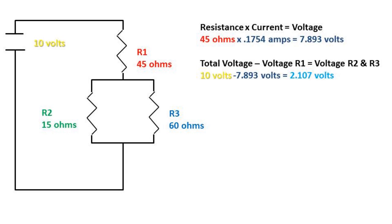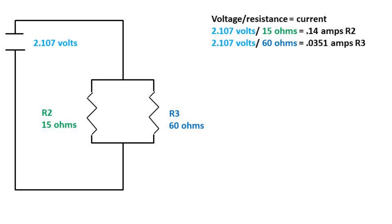We can take the total voltage minus the voltage of resistor one to get the voltage at resistor two and three. So in this case, we get a voltage of 2.107 volts at resistor two and resistor three. We can condense the circuit into a parallel circuit with voltage of 2.107 volts going to resistor two and resistor three.